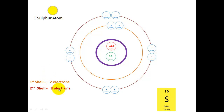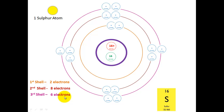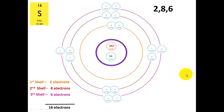And we will have 6 in the third shell — 1, 2, 3, 4, 5, 6 in the third shell — giving us a total of 16 electrons. So we've got a configuration of 2, 8, and 6. We now have 16 protons and 16 electrons, giving an overall charge of 0.